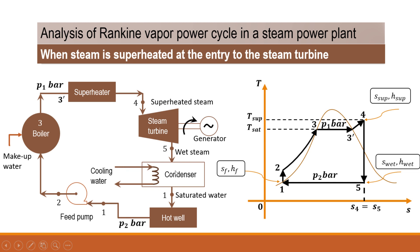The wet steam enters the condenser where vacuum is maintained and cooling water is circulated. In the condenser, latent heat is absorbed from the wet steam, converting it to saturated water — only a phase change takes place, from vapour to liquid, at constant temperature. That saturated water is stored in the hot well and from there, at lower pressure, it is pumped by the feed pump back to the boiler at higher pressure.